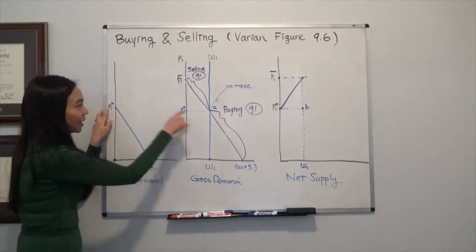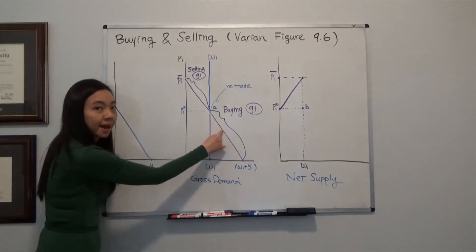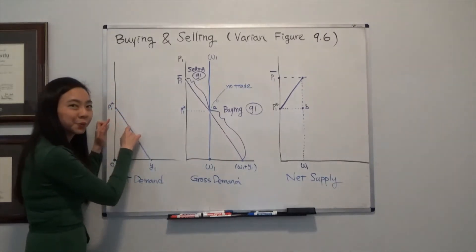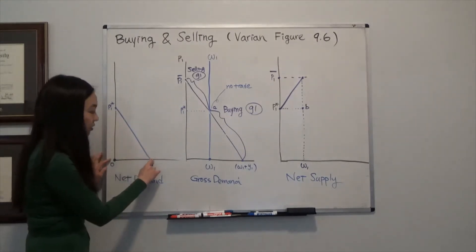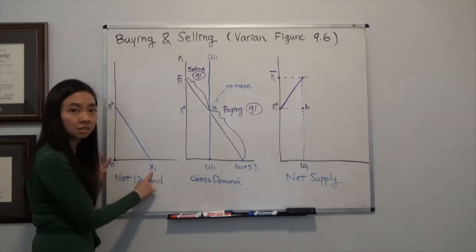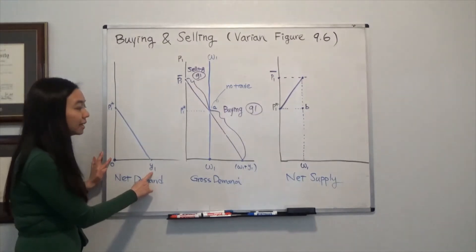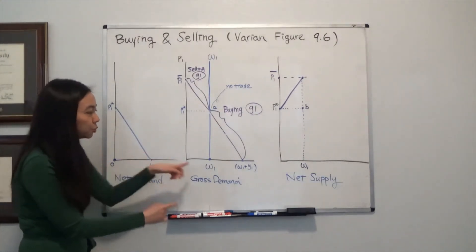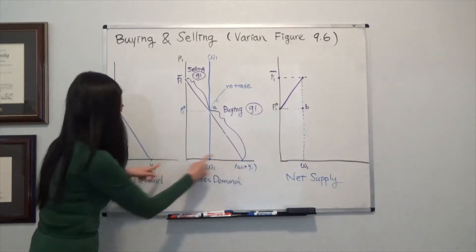Once the price is lower than P1 star, I'm going to start to go to the market and buy some additional Good 1. So you can see I'm starting to buy more Good 1. And up to what point, say up to when the price is zero, I end up buying Y1 additional units of Good 1. That means my gross consumption of Good 1 is equal to my initial endowment, omega 1 plus Y1.